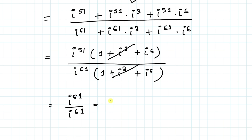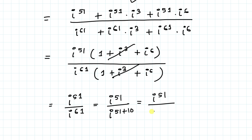Similarly, iota to the power 61 can be written as iota to the power 51 plus 10. Applying the same exponential rule, we can write iota to the power 51 divided by iota to the power 51 times iota to the power 10. The iota to the power 51 terms cancel out, leaving us with 1 divided by iota to the power 10.